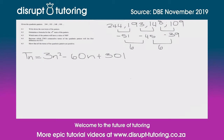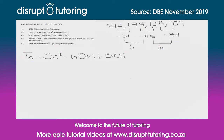So 4.5 says: show that all the terms of the quadratic pattern are positive. Now this is tricky, because when we calculated the quadratic pattern's general term, we noticed there's no way we can look at this general term and determine whether or not Tn is always going to be positive.